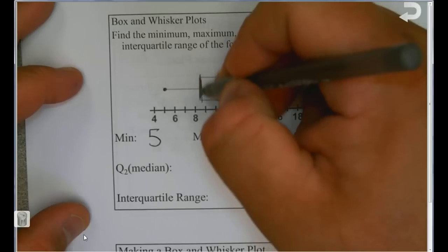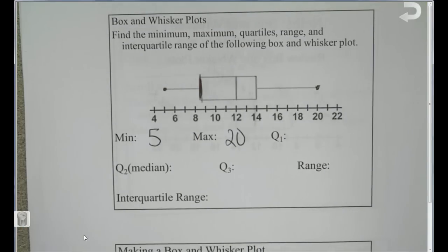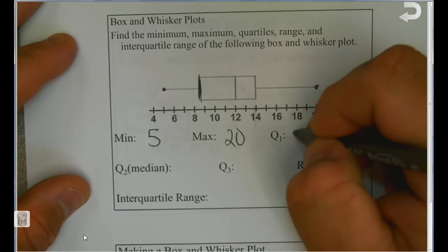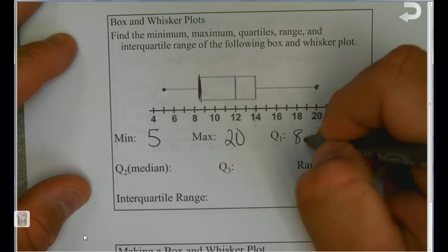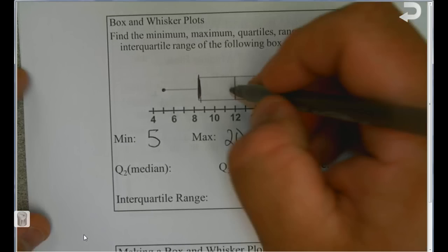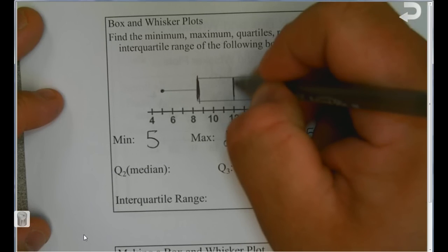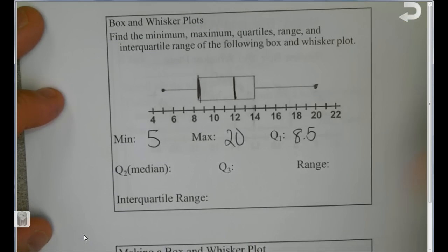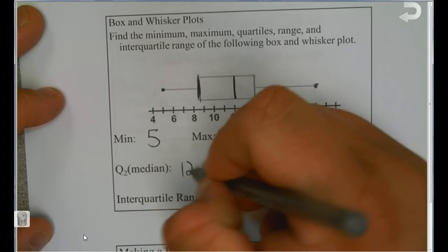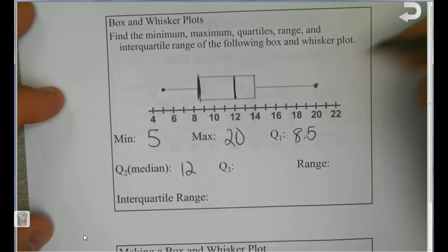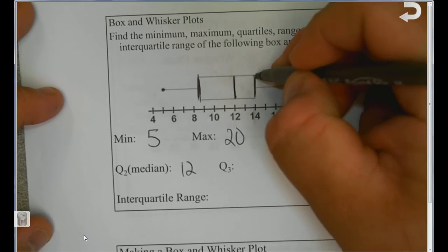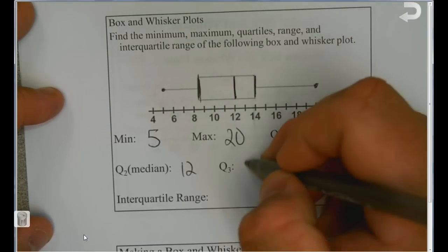Q1 is the left bound of the box, so Q1 is 8.5. Q2, or the median, is the middle line of the box, and that's 12. Q3 is the right bound of the box, so that's 14.